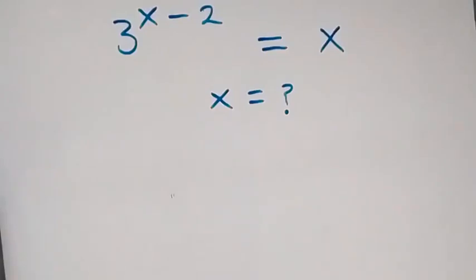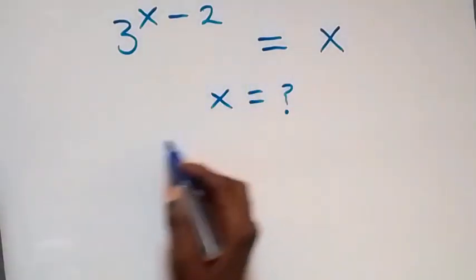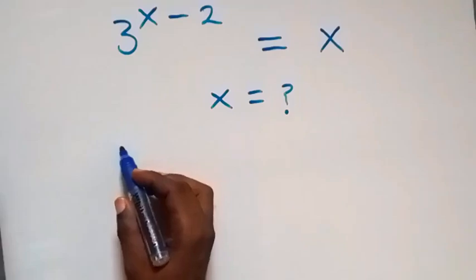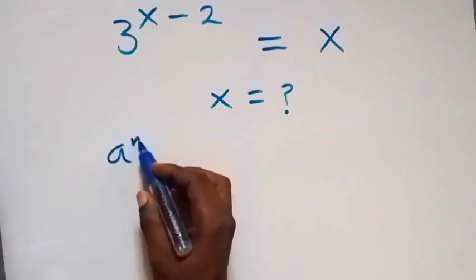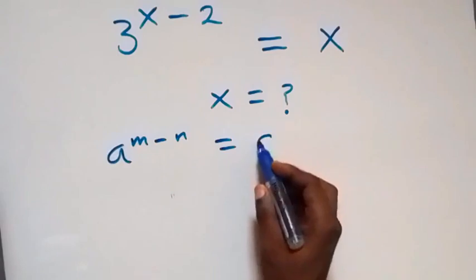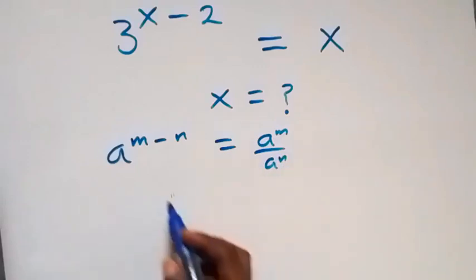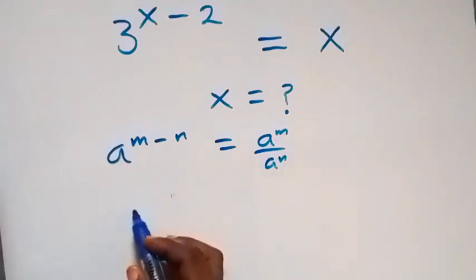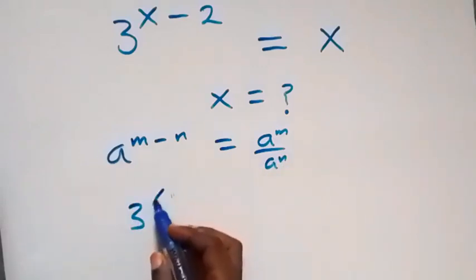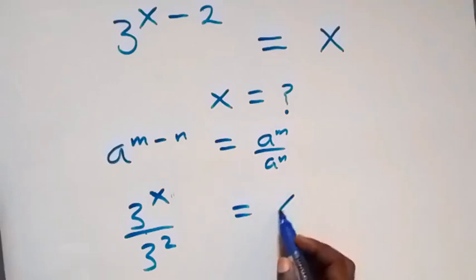Hello, you are welcome. How to solve for x in this nice exponential equation. We can rewrite what is given here using the law of indices: a raised to power m minus n is the same as a raised to power m over a raised to power n. So here we have 3 raised to power x over 3 squared, which now equals x.